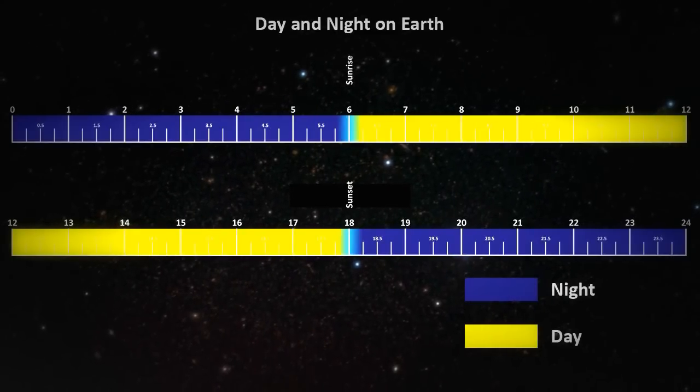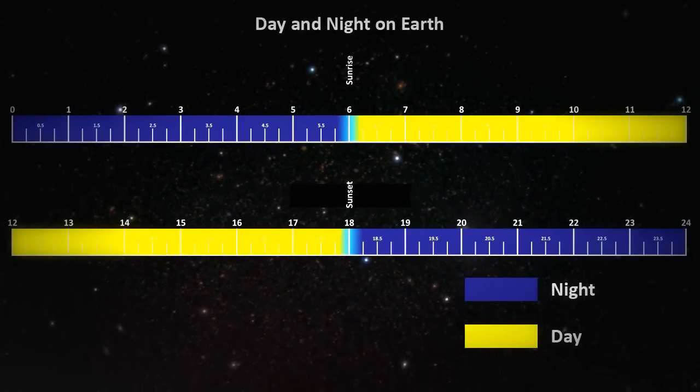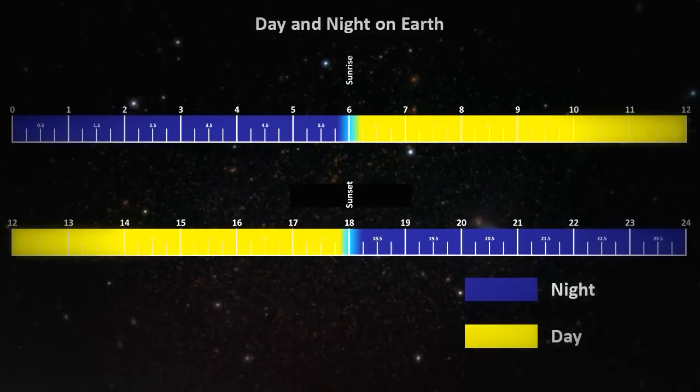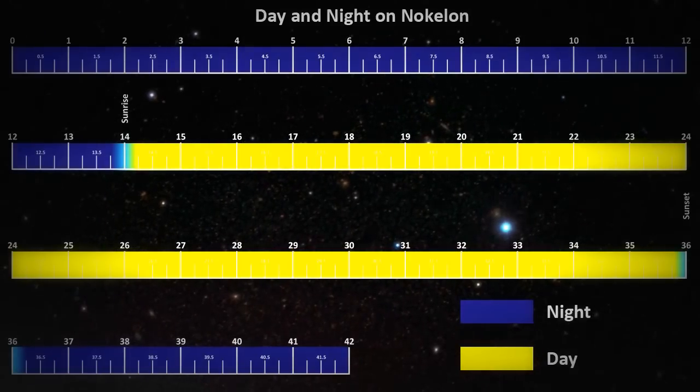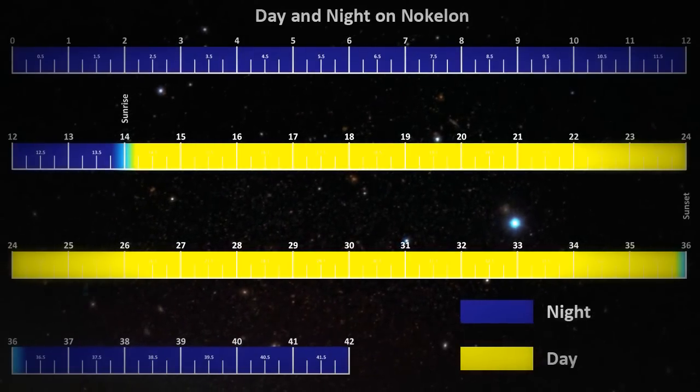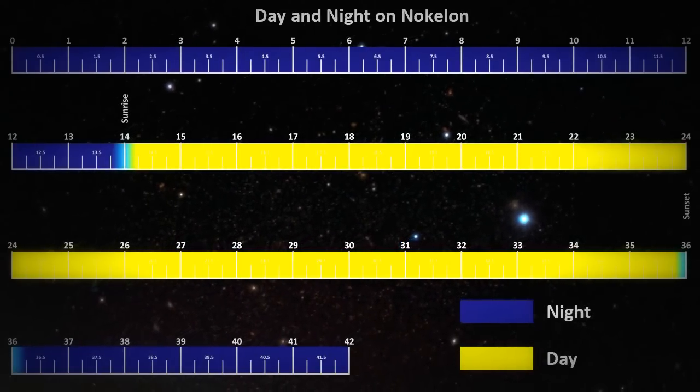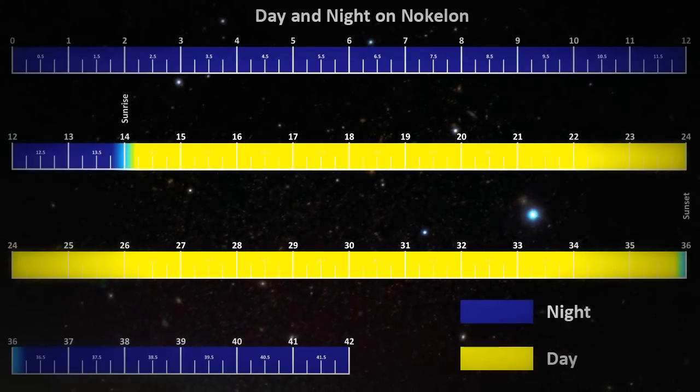We will compare the day and night times of Earth and Nolcolon. There are 42 hours on a Nolcolon day but only 24 on an Earth day. Therefore, the sun rises at 6 and sets at 19 on Earth but it rises at 14 and sets at 36 on Nolcolon.